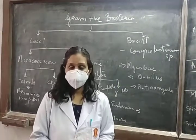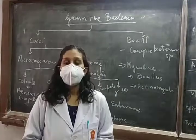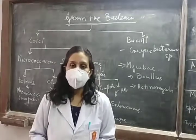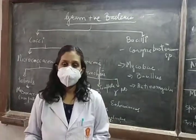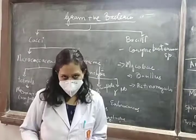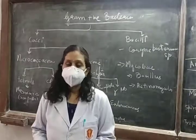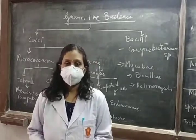Cocci are round or oval shaped. The other form is bacillus — bacillus are like cylindrical rod-shaped bacteria.